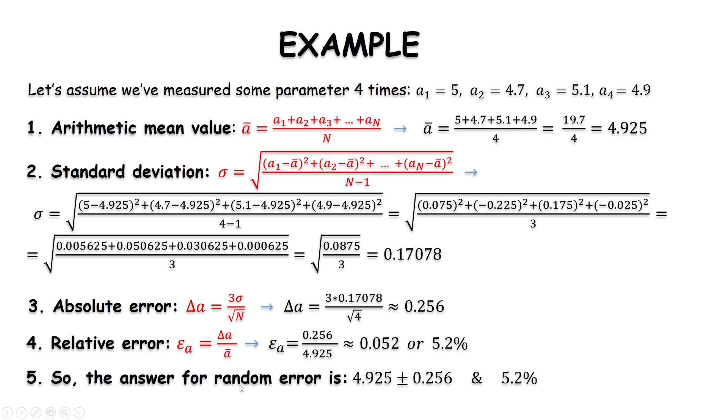So, the final answer for the random error is 4.925 plus minus 0.256 or 5.2 percentages. So, we can say that our random error is 5.2%. Or if you look at here, this is our absolute value plus minus 0.256. That's an example for just a random example to show you how to do the calculation for such problems.